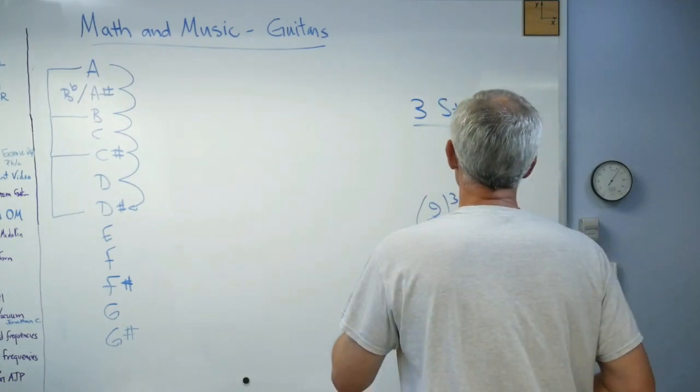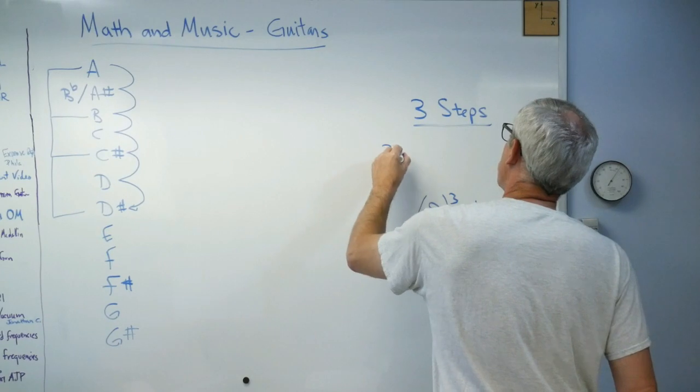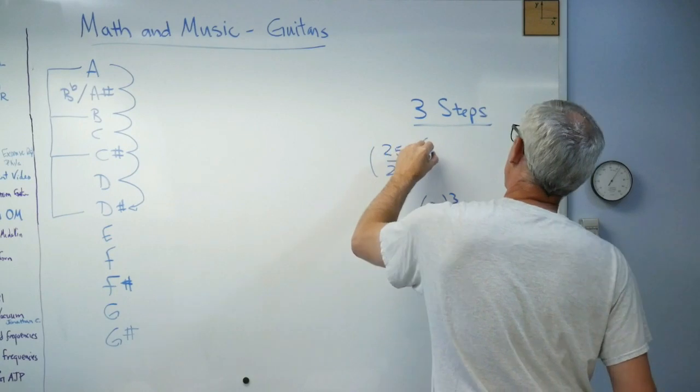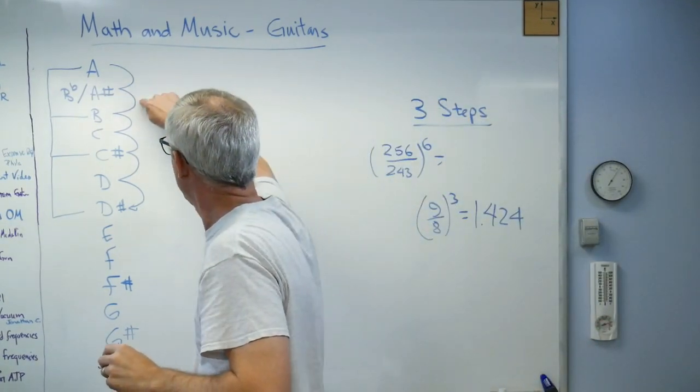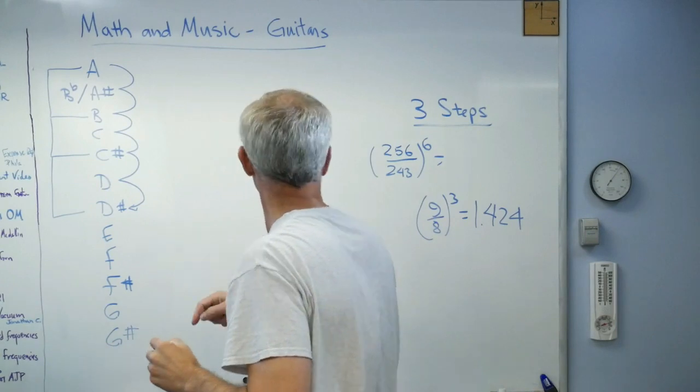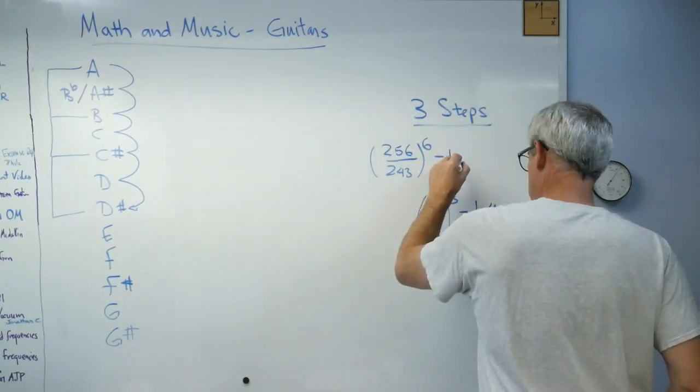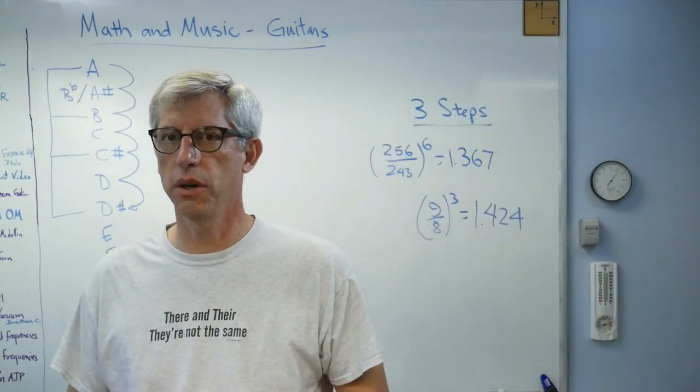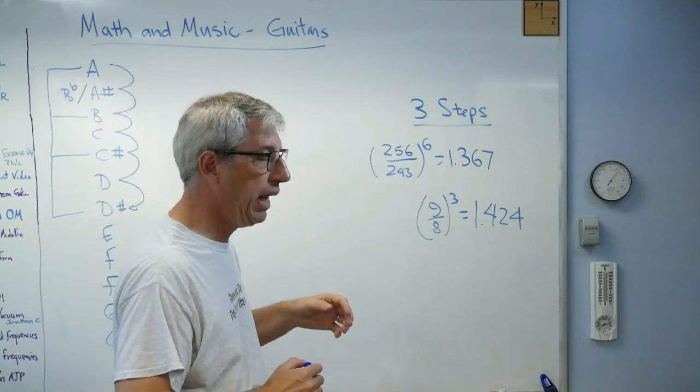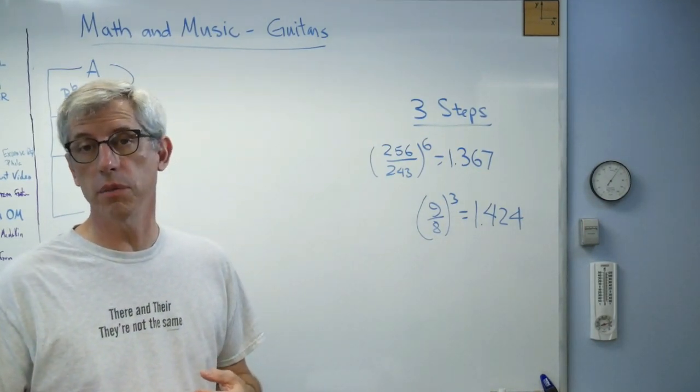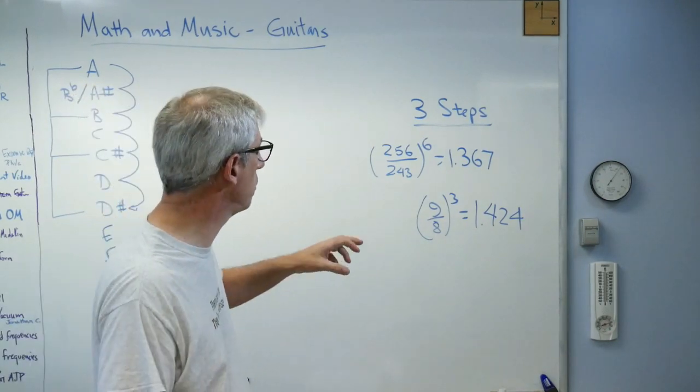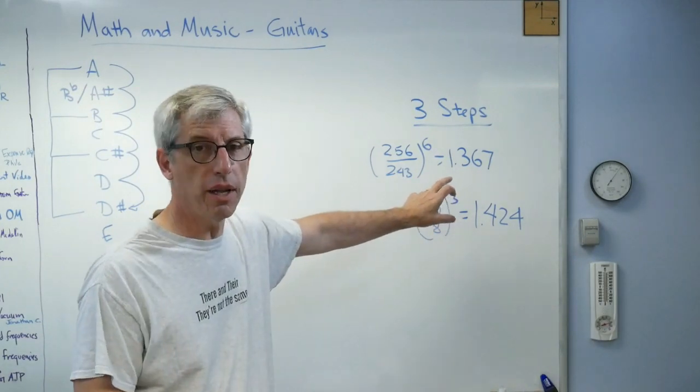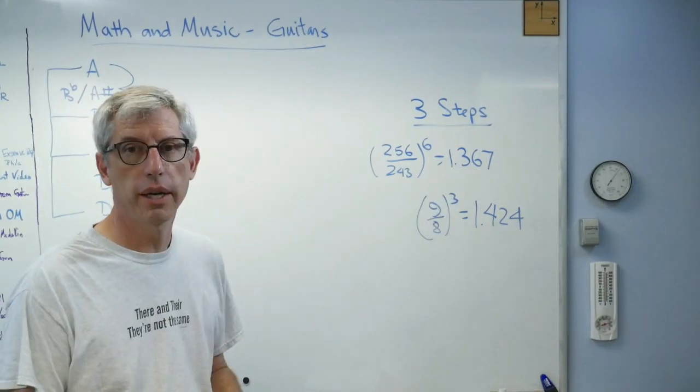So, let's see, 256 over 243 to the sixth power now, because I've got one, two, three, four, five, six. Gets me to the same place. And that comes out to 1.367. Those aren't the same. In fact, since our ears are very sensitive, and we can hear the difference between 1% in different ratios, that's terrible. That's not even close. That's not going to work.